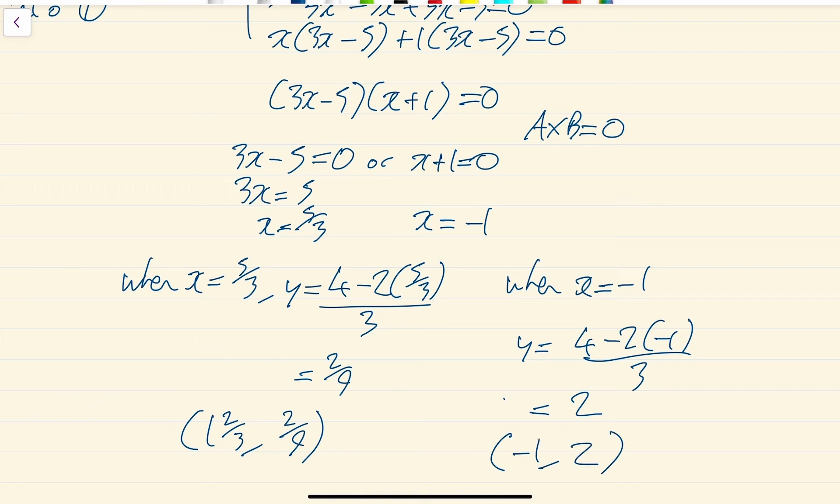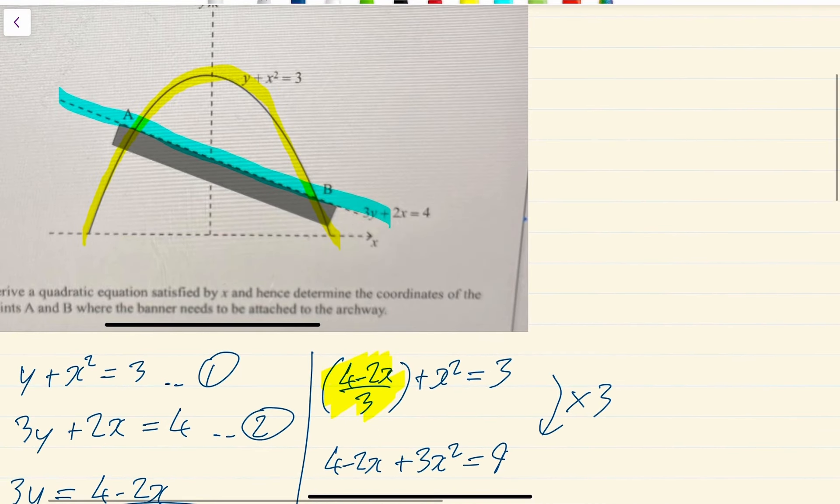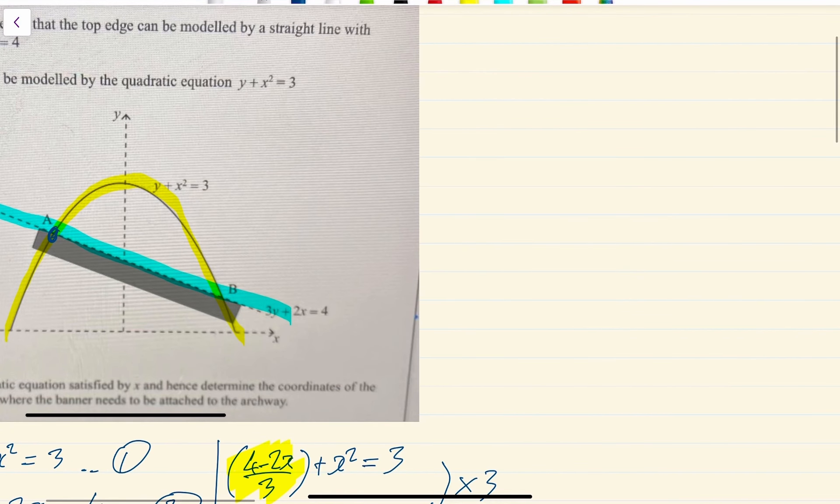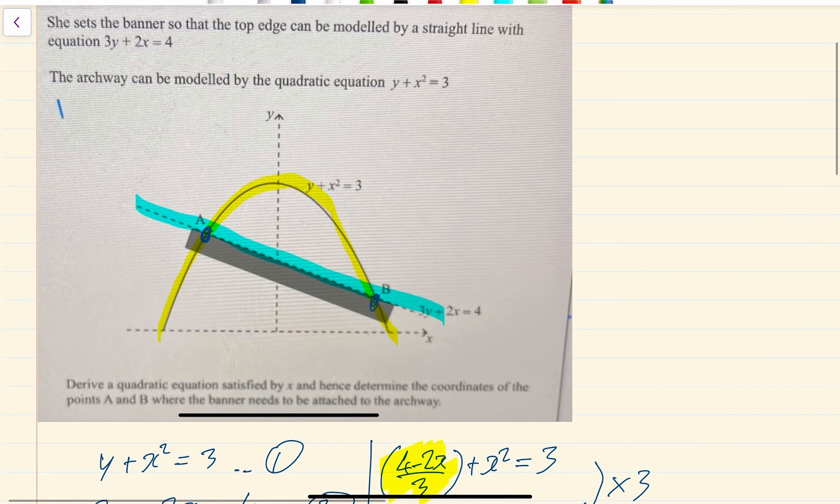I would look back at the diagram and see if it makes sense. So my coordinates are minus 1, 2 and 1 and 2 thirds and 2 ninths. And there you are. Minus 1, 2 would be here. And the other one, 1 and 2 thirds and 2 ninths, you can see it would be here. So that would be your A and your B.